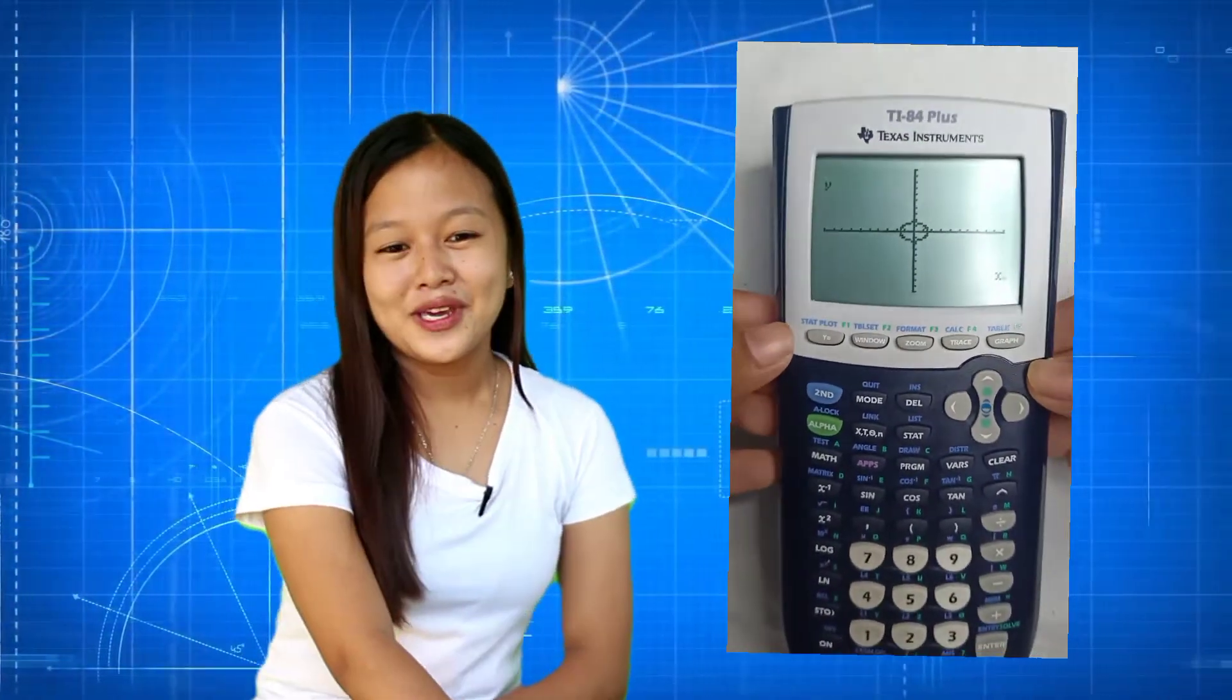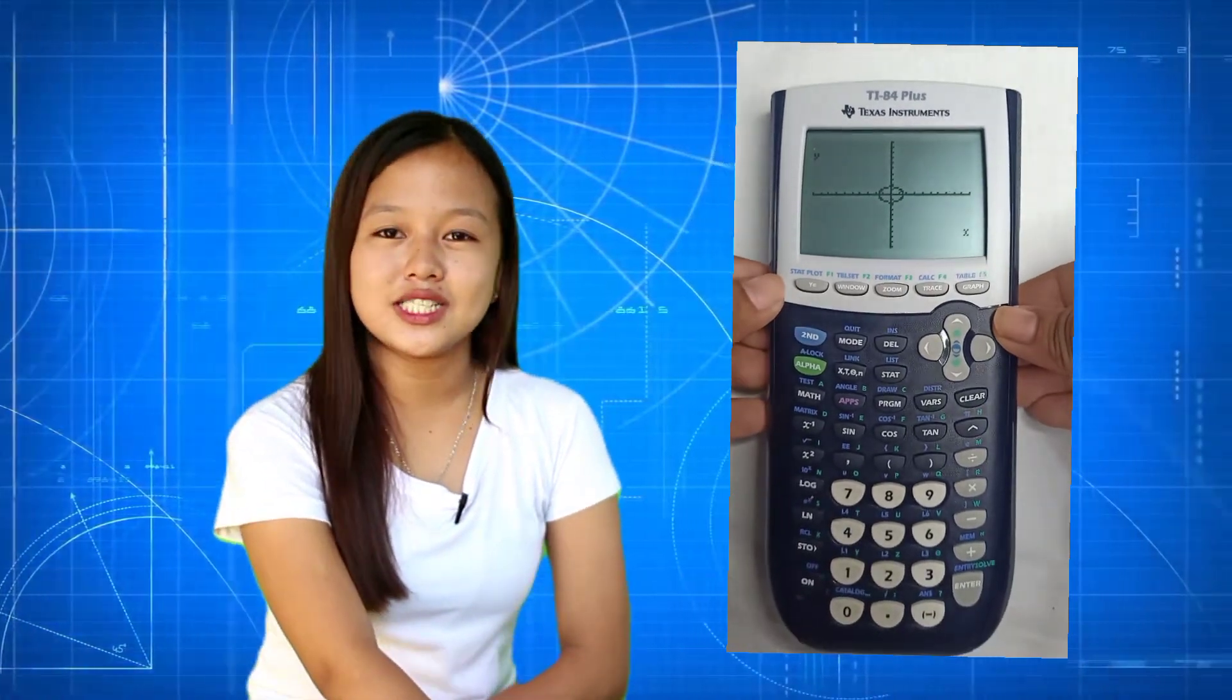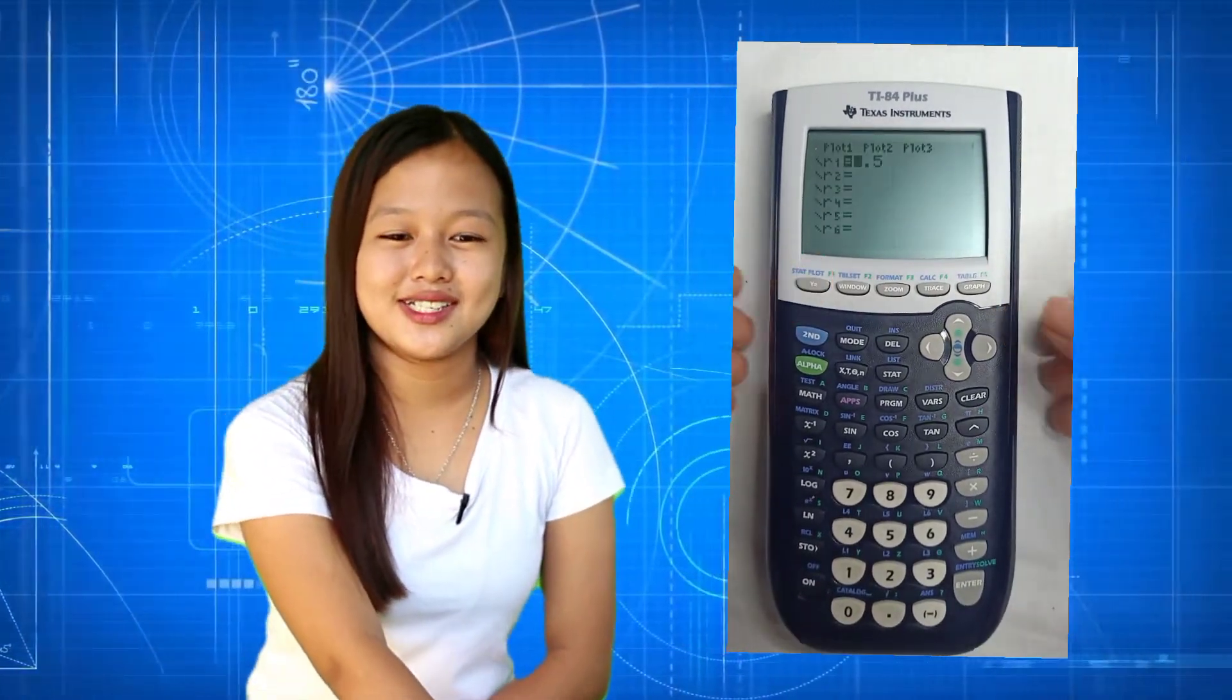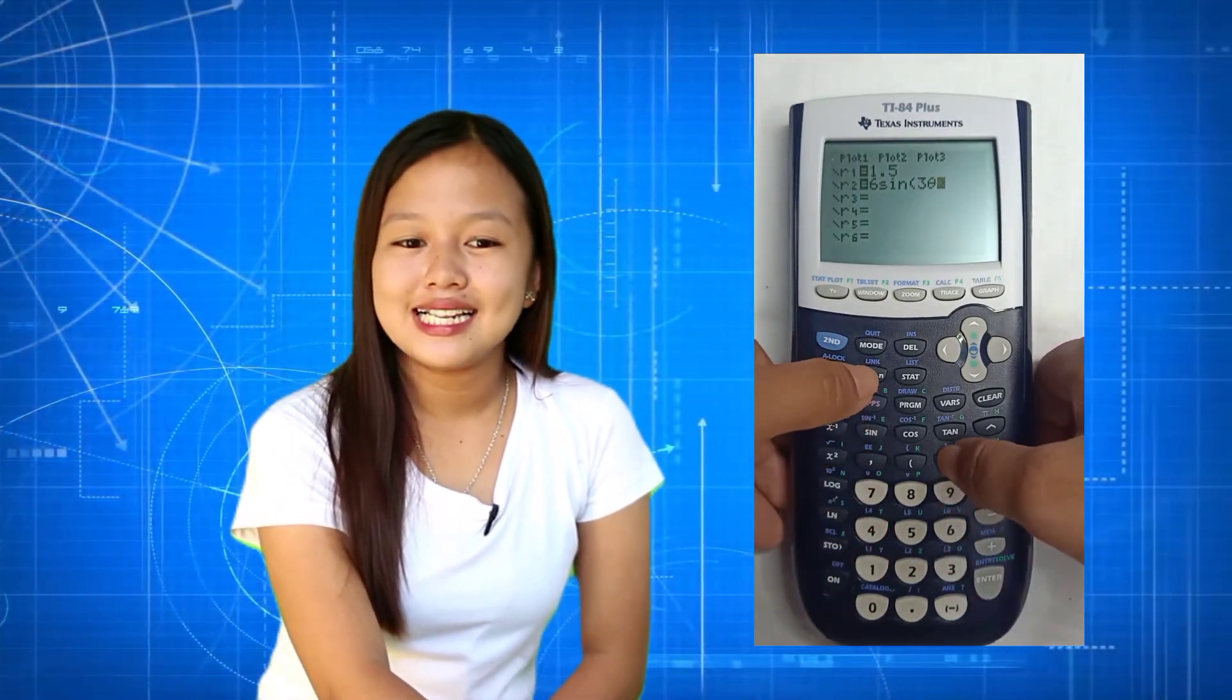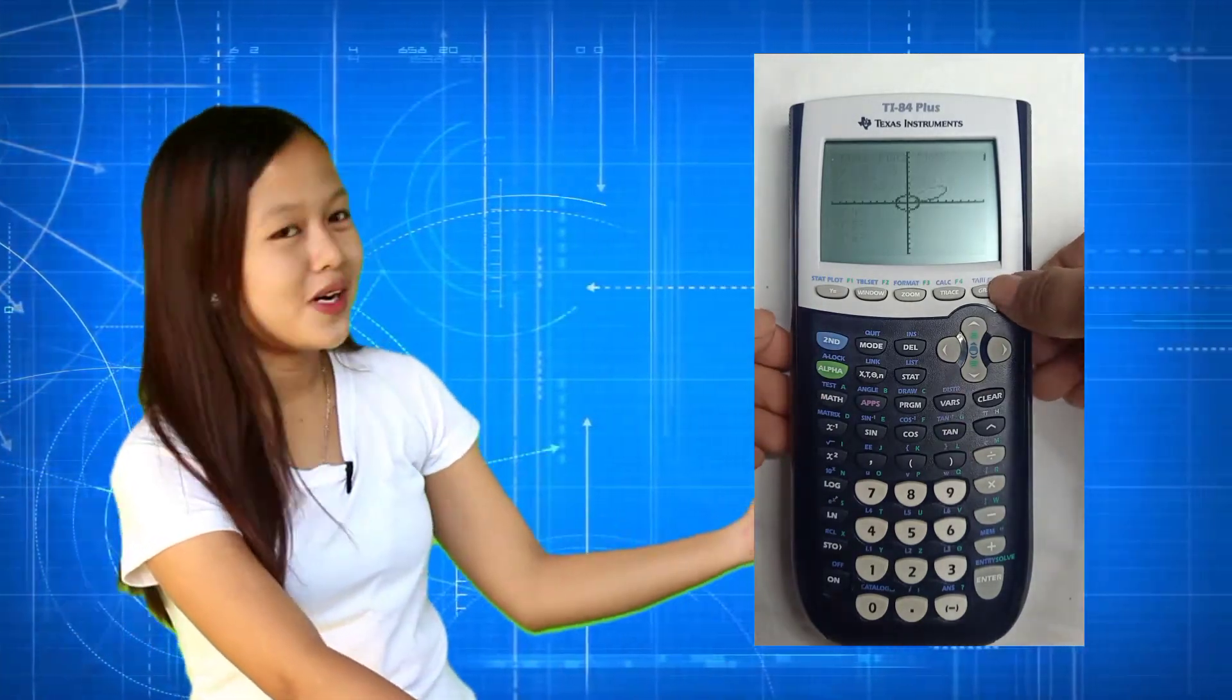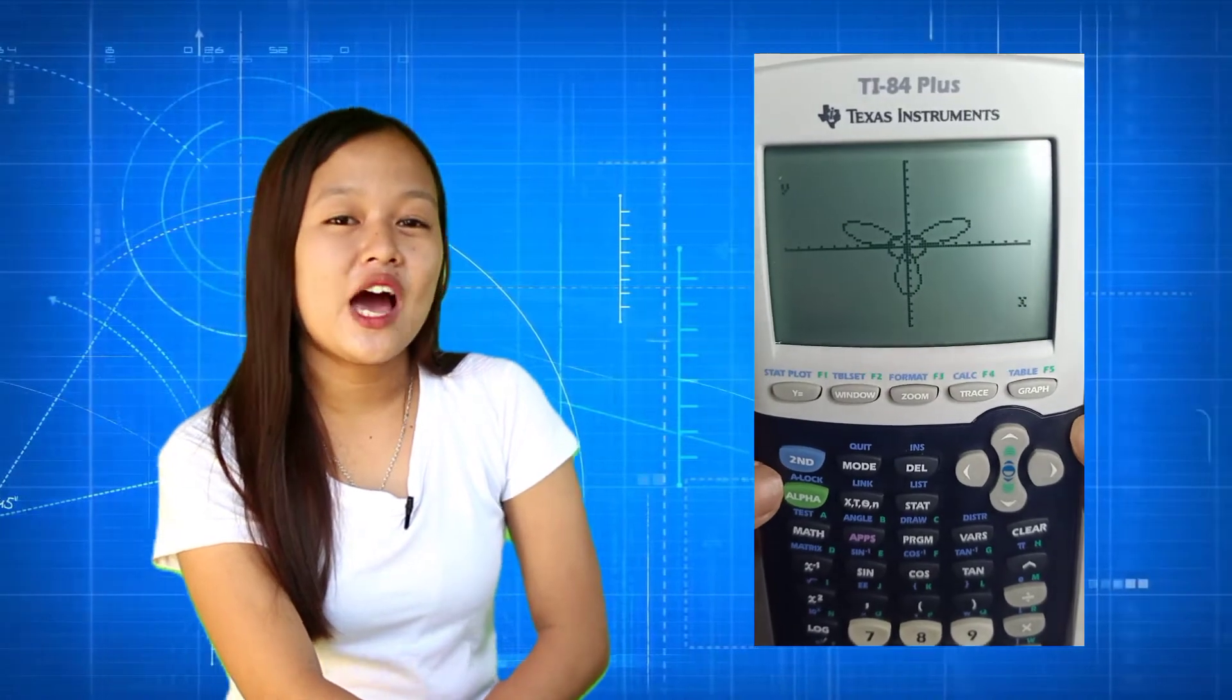And then, we go back to the y equals button to proceed to the next equation. The next polar equation is r equals 6 sine of 3 theta. After that, let's press the graph button. Wow, it is visible that we have one three-petal rose is formed. It is quite amazing.